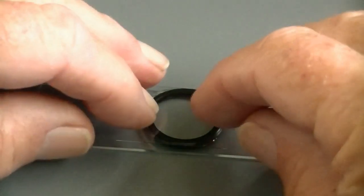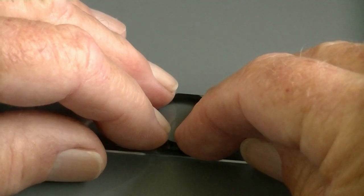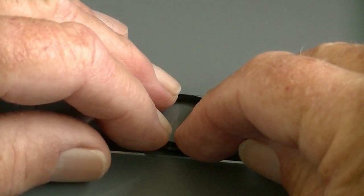And then apply gentle pressure to make a good contact between the cover slip, the slide, and the O-ring.